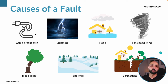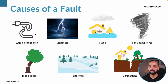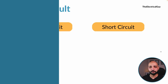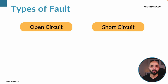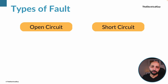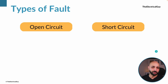Now let us talk about the different types of faults seen in the power system. At the top level there are two main types: one is the open circuit and the other is the short circuit. Let's talk about open circuit first, and then we will talk about short circuit.